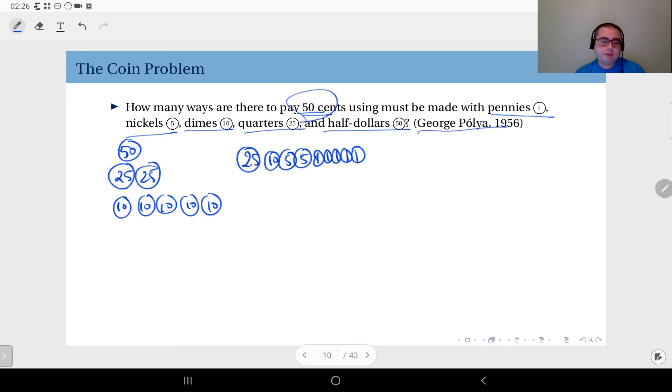Furthermore, maybe you can do it by hand with 50 cents, but what if you are asked the same question with 50 dollars? That makes 5,000 cents. That would be quite cumbersome. So we are going to look at this problem and give a formulation to this problem that will lead us to generating functions.